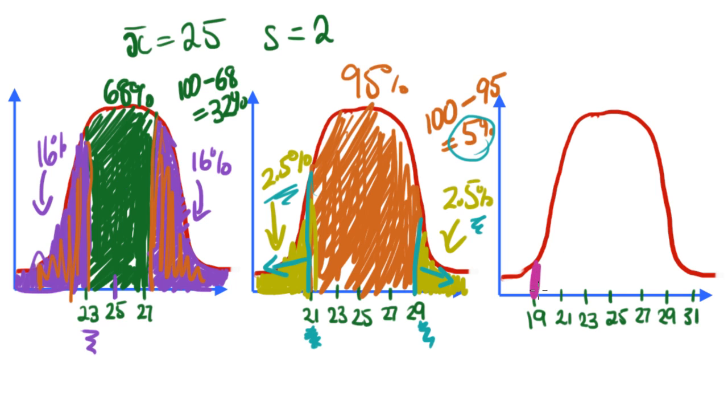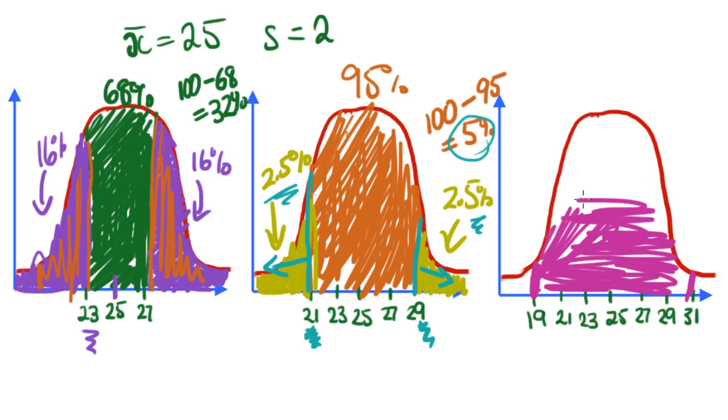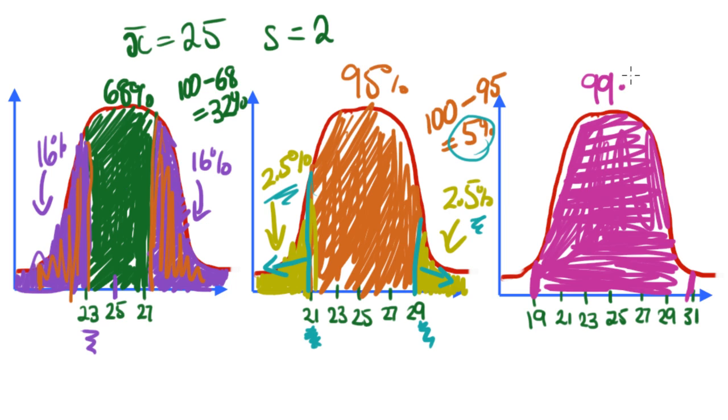And of course this works for the three standard deviations. We've got between 19 and 31, which is three standard deviations either side. So in this big pink section in the centre, we have 99.7% of all the data, 99.7%. So what is left over from 99.7? It's 100 minus 99.7, which gives us 0.3%.